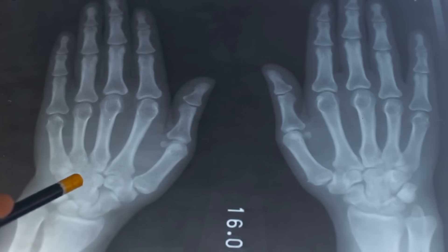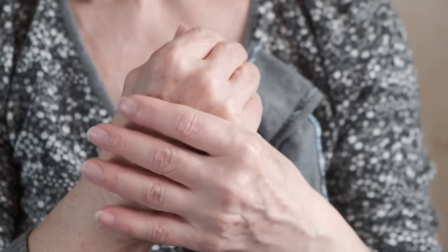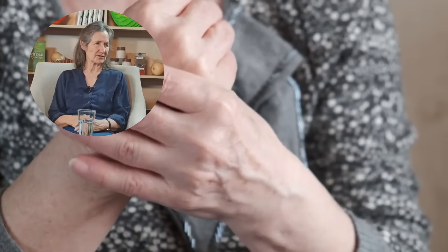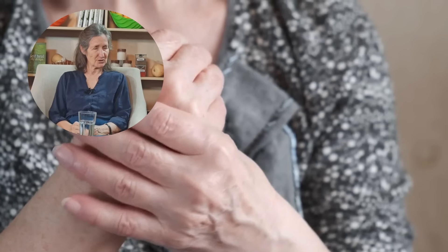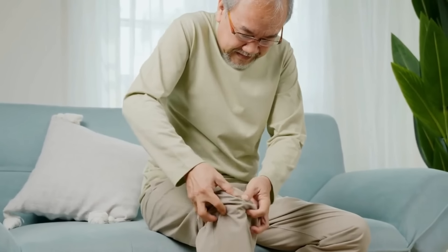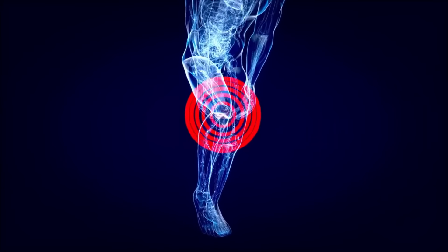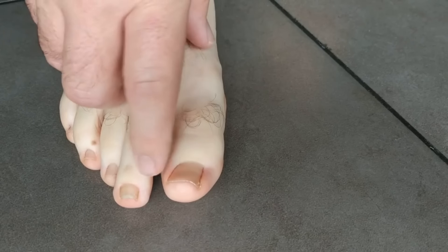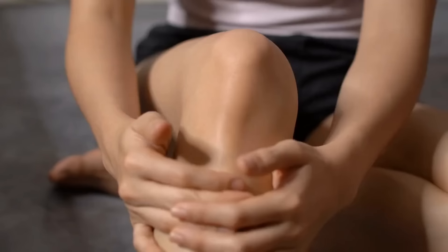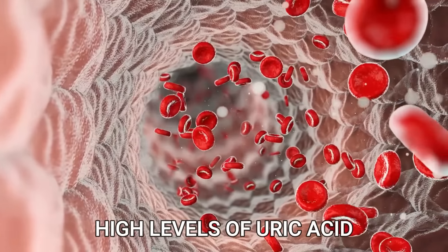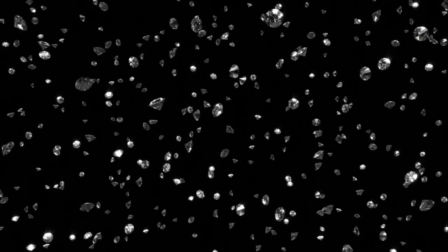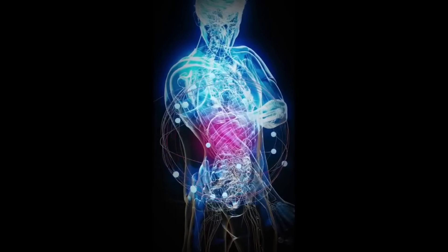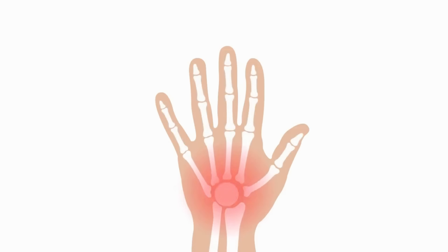Barbara O'Neill, an Australian health teacher internationally known for her focus on the body's natural healing potential, dives into the important topic of gout. Gout is one of the most painful forms of arthritis. It is characterized by sudden, severe attacks of pain, redness, and tenderness in the joints, often affecting the big toe but capable of impacting any joint including the ankles, knees, elbows, wrists, and fingers. The root cause of gout lies in high levels of uric acid in the blood, which leads to the formation of sharp, needle-like urate crystals in and around the joints.